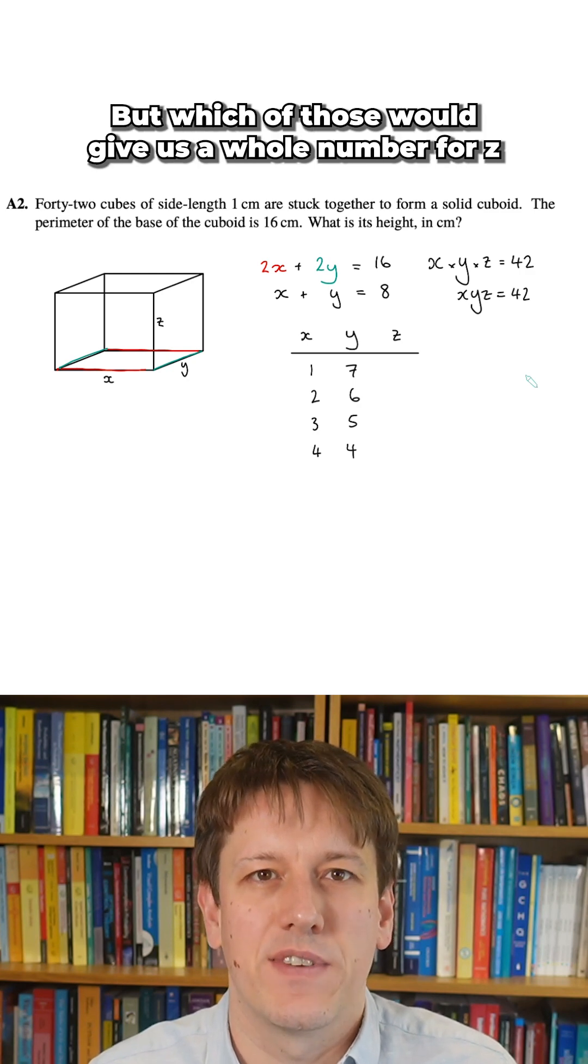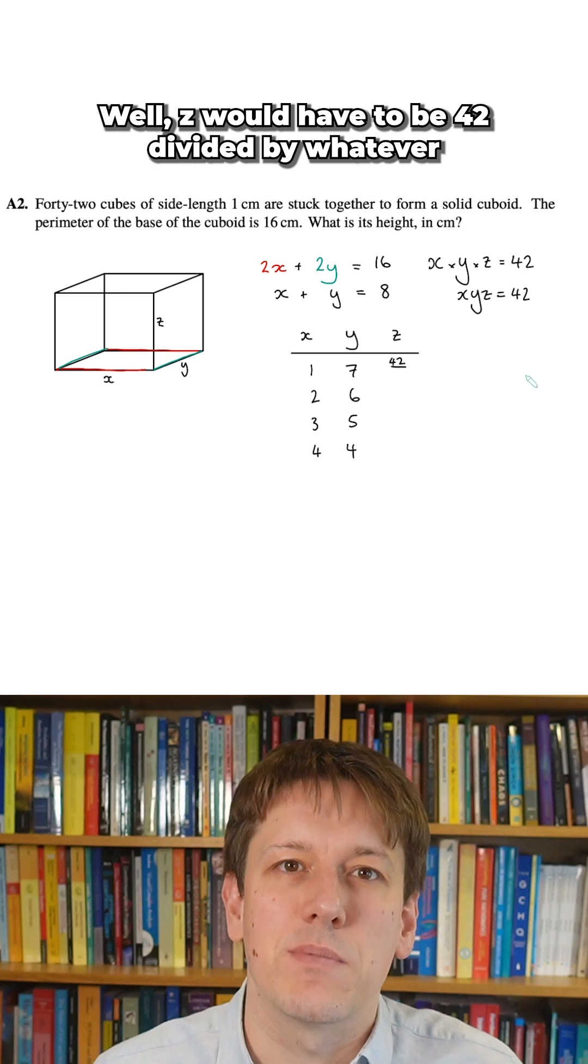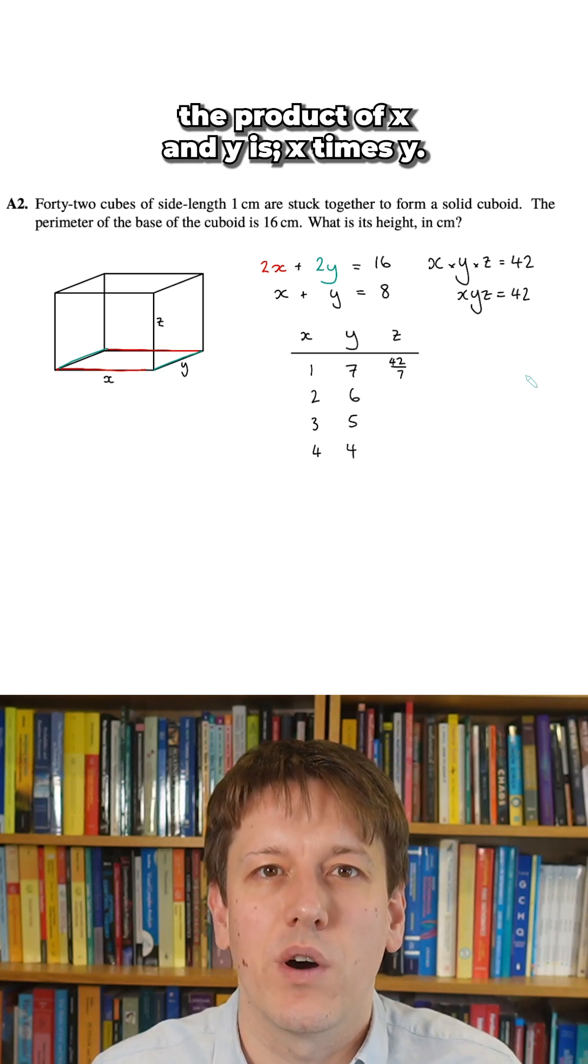But which of those would give us a whole number for z if we need x times y times z to be 42? Well, z would have to be 42 divided by whatever the product of x and y is, x times y.